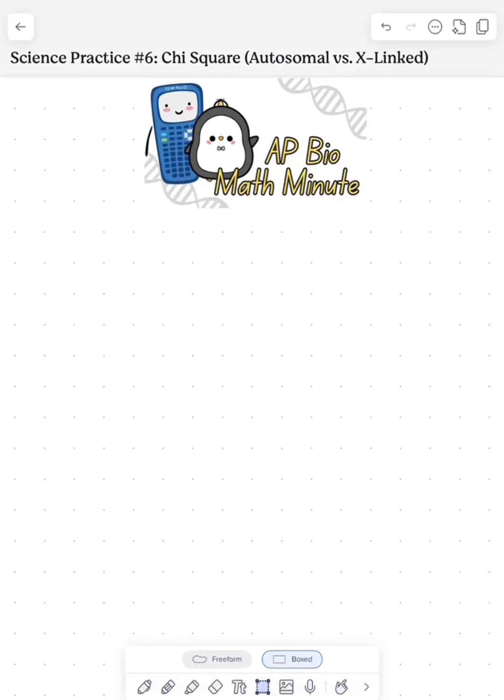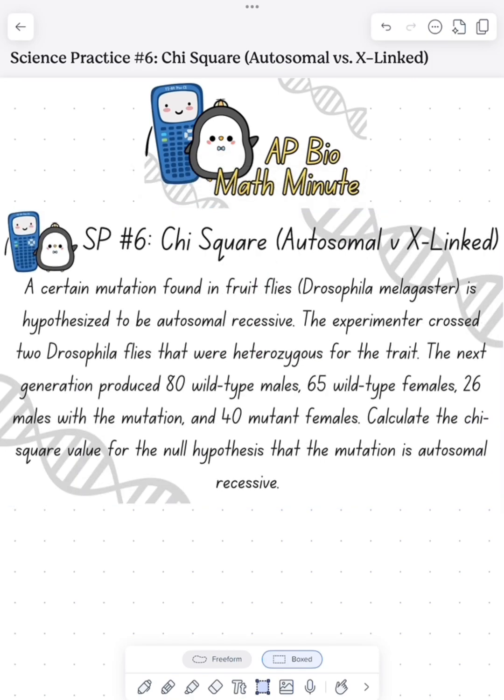What's up, EpiBio, today we're going to do a little EpiBioMath Minute looking at chi-square analysis. There's a certain mutation found in fruit flies and it's thought to be autosomal recessive. There's an experimenter that crossed two different flies that they think are heterozygous.